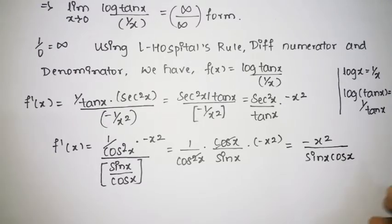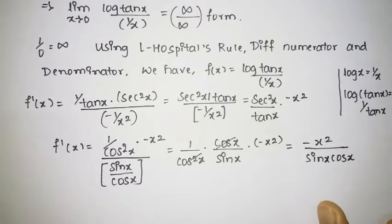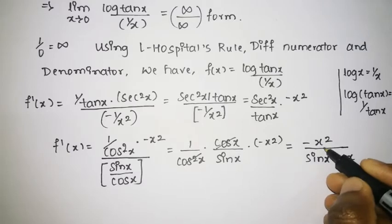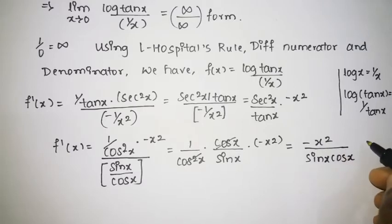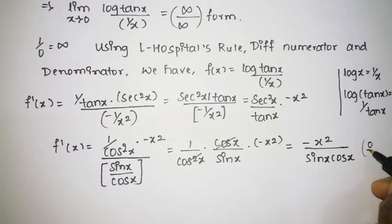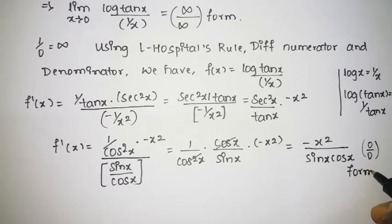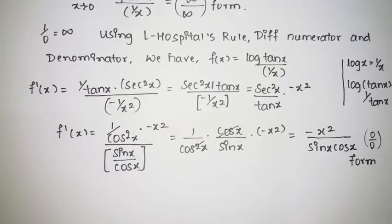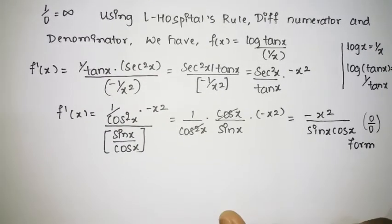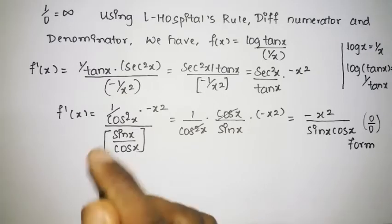Now checking by substituting the limit as x tends to 0: x is 0 and sin 0 is 0, so this gives the 0 by 0 form. Whenever we have the 0 by 0 form, we shall again differentiate.